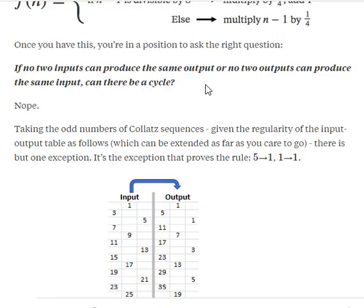At this point, we can ask a rather naive question, which is actually false. The question is: if no two inputs can produce the same output, or no two outputs can produce the same input, can there be a cycle?